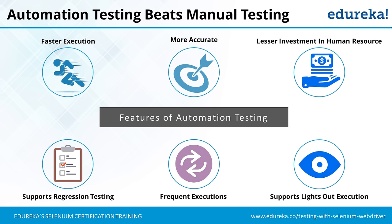Automation testing beats manual testing in several ways: faster execution, more accurate, lesser investment in human resources, supports regression testing, frequent executions, and supports lights-out execution. Regarding faster execution — writing the script takes time, but only the execution is faster. The effort put in initially into creating the automation test suite is huge, but looking at the long-term effect, it's so beneficial that we tend to overlook that initial effort.